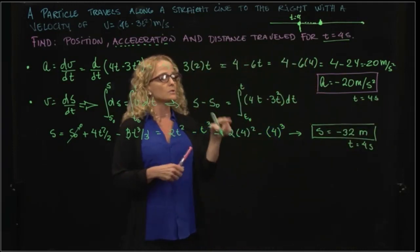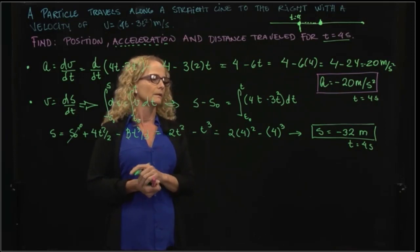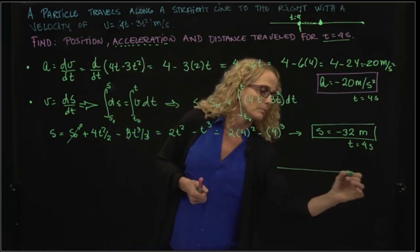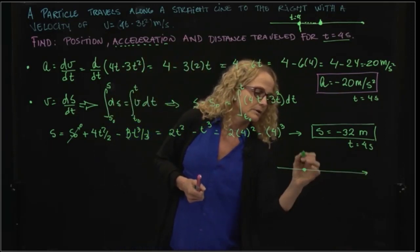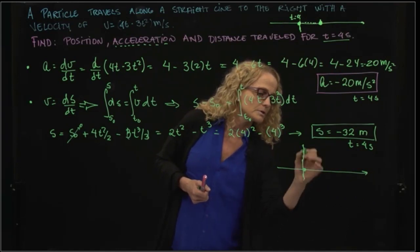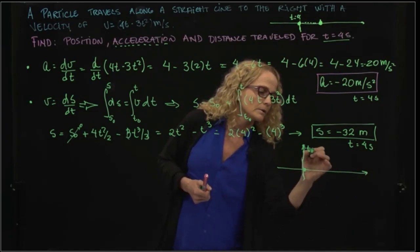It gave us also a negative value. What does that mean? It means that if our particle started in our 0 position, t = 0, it went somehow to the positive and ended in a negative value for t = 4 seconds.